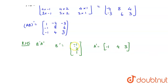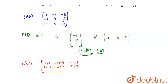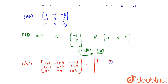So I have to find the product BᵀAᵀ. Bᵀ is of order 3×1 and Aᵀ is of order 1×3, so this will again be a matrix of 3×3 order. BᵀAᵀ equals: (-1)×(-1)=1, (-1)×4=-4, (-1)×3=-3; 2×(-1)=-2, 2×4=8, 2×3=6; 1×(-1)=-1, 1×4=4, 1×3=3.